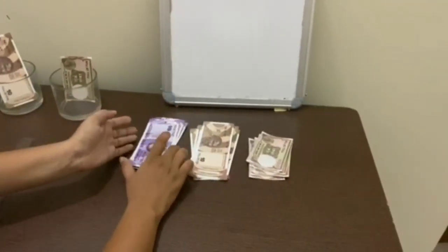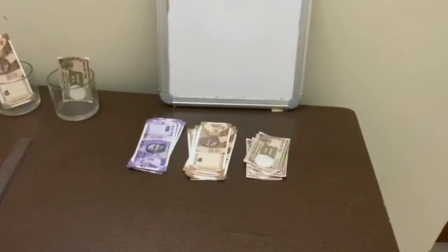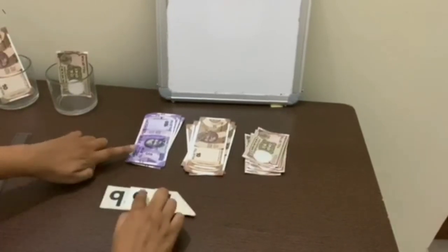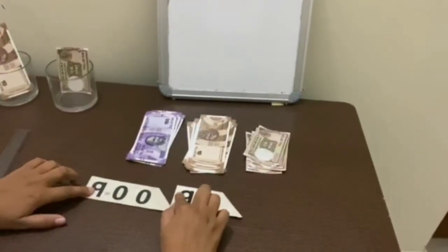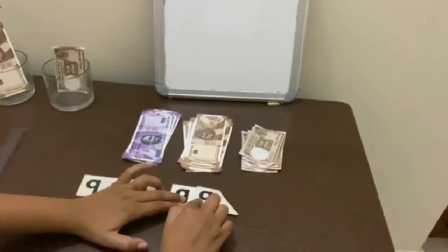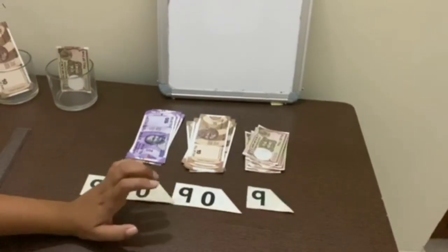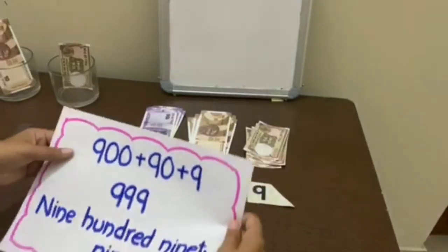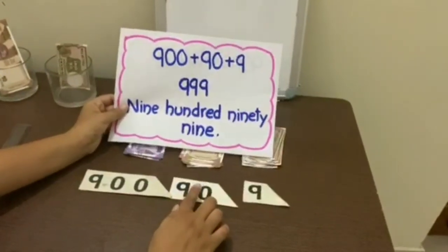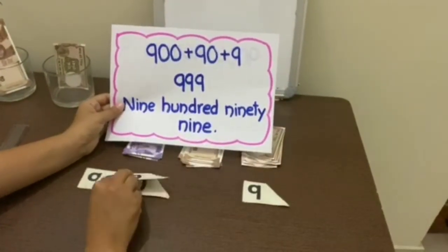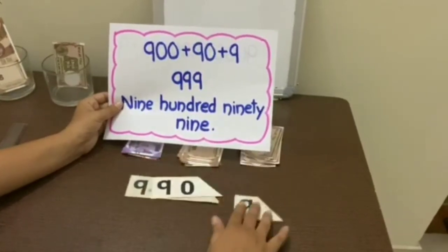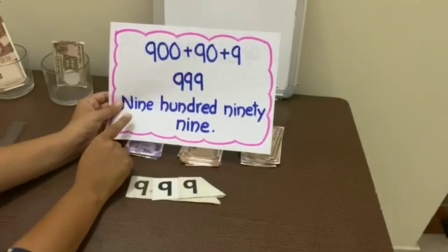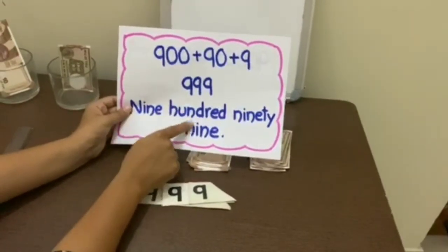Now have a look at the man card. So here we have 999. Now have a look at this sheet. If we join them, it becomes 999, and it is written in words as nine hundred and ninety-nine.